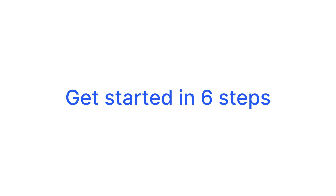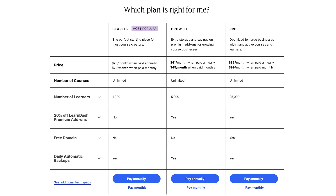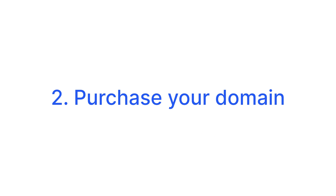Here's the process to get started in six easy steps. First, choose which LearnDash Cloud plan you want — there are three options: Starter, Growth, and Pro. Most creators will opt for the Starter plan. Next, purchase your domain name, check its availability, and purchase it through LearnDash.